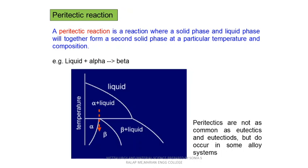Next we will discuss the different reactions taking place within a phase diagram — different invariant reactions or equilibrium reactions. We have already discussed the eutectic reaction, which takes place in eutectic phase diagrams. In the eutectic reaction, the transformation is from liquid to a two-phase solid: the molten metal in the liquid state directly transforms to a two-phase solid state.